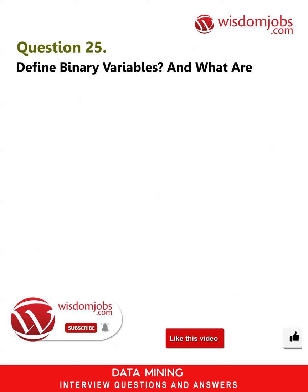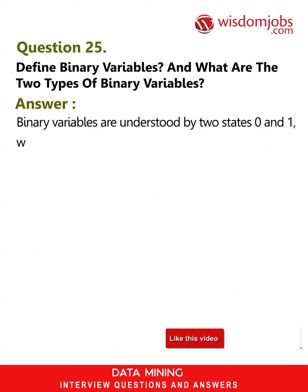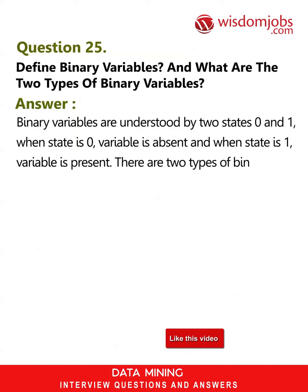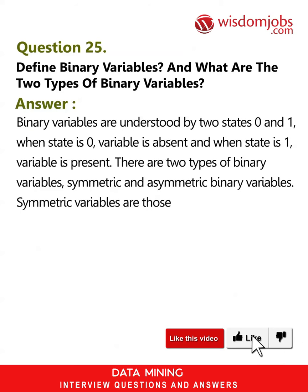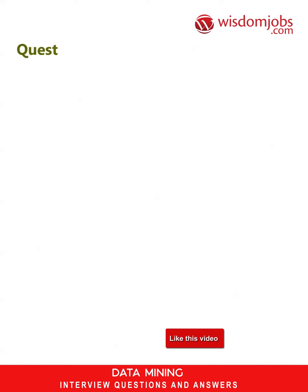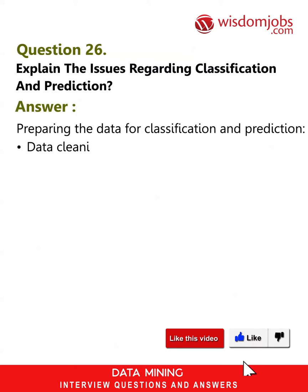Question 25: Define binary variables and what are the two types of binary variables? Answer: Binary variables are understood by two states — zero and one. When the state is zero, the variable is absent, and when the state is one, the variable is present. There are two types of binary variables: symmetric and asymmetric binary variables. Symmetric variables are those variables that have the same state values and weights.